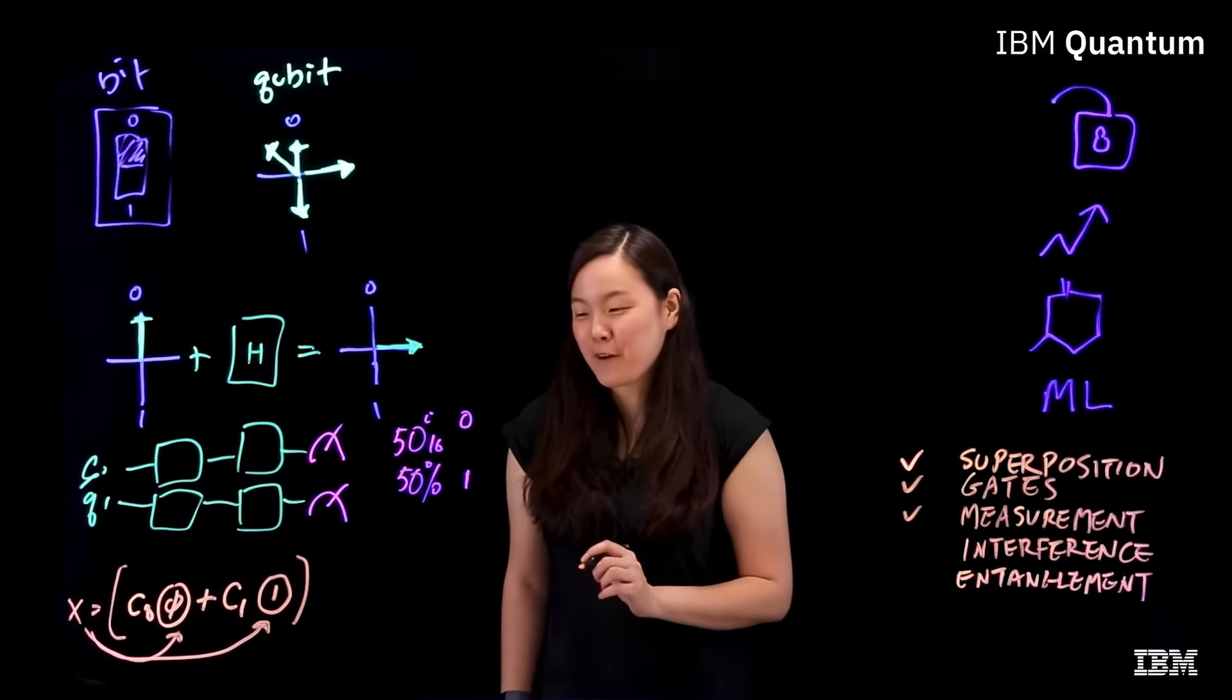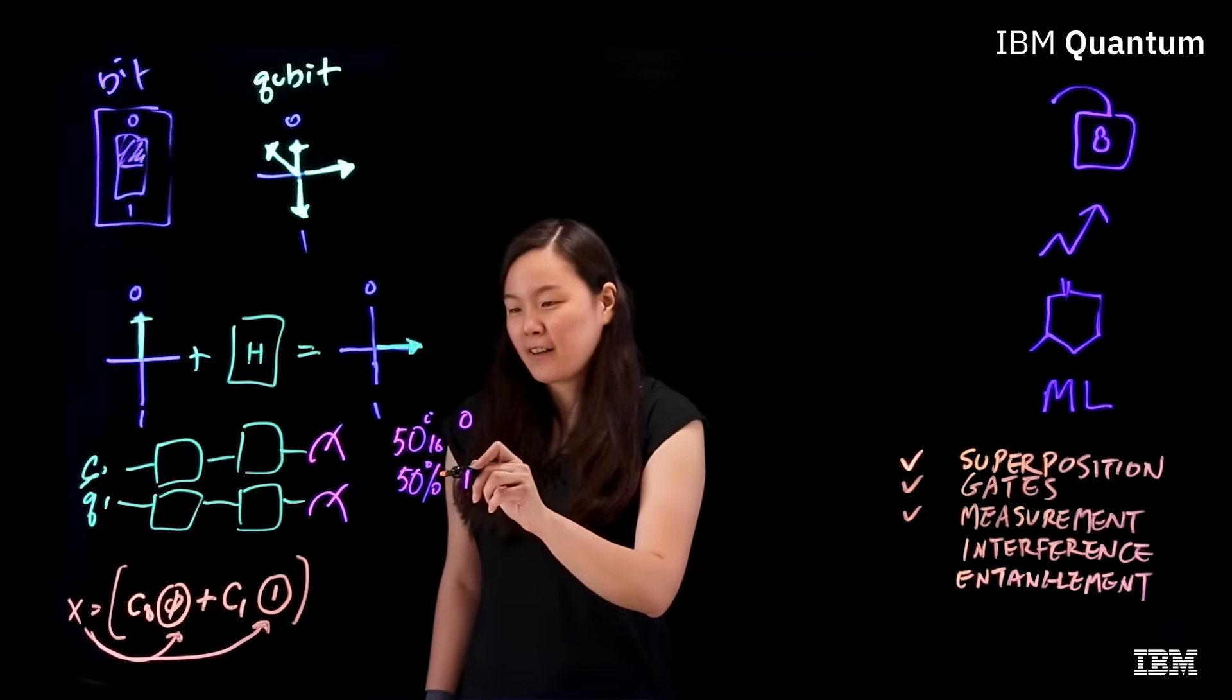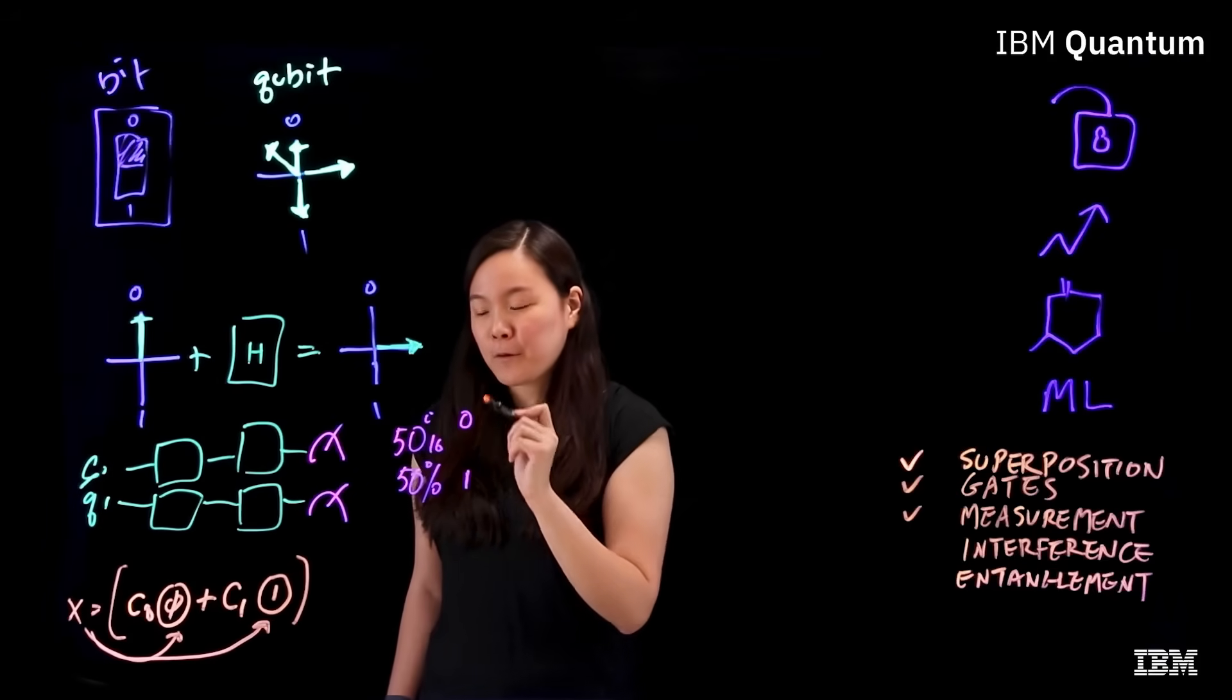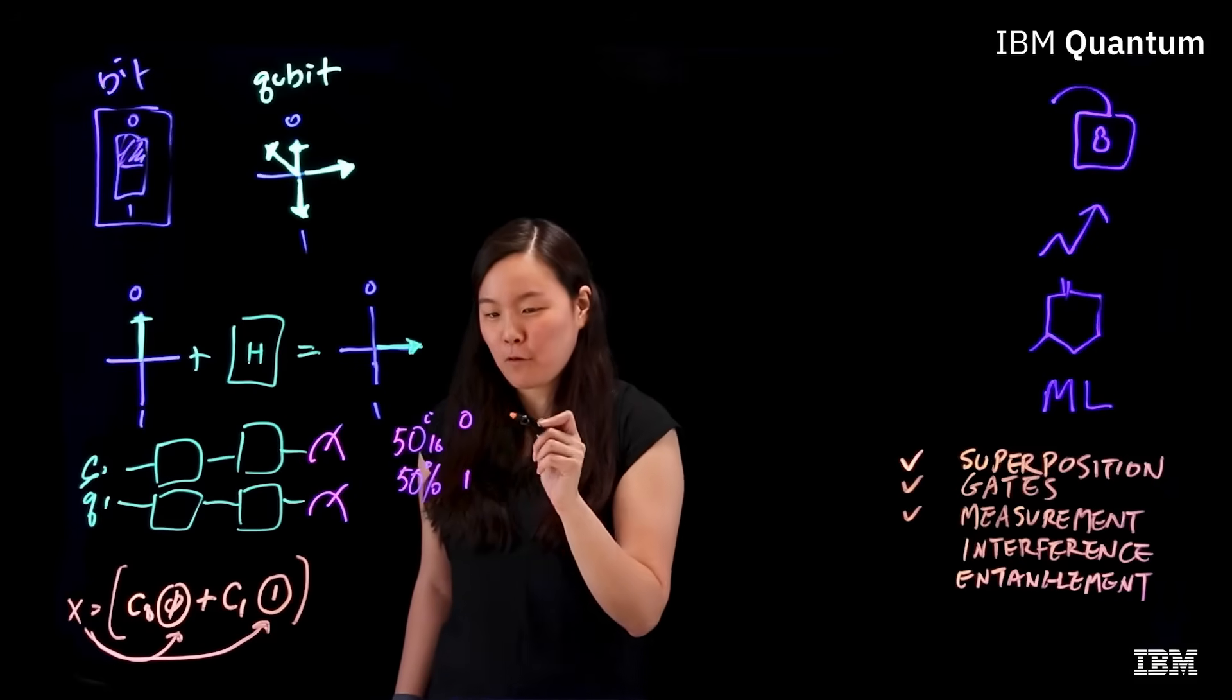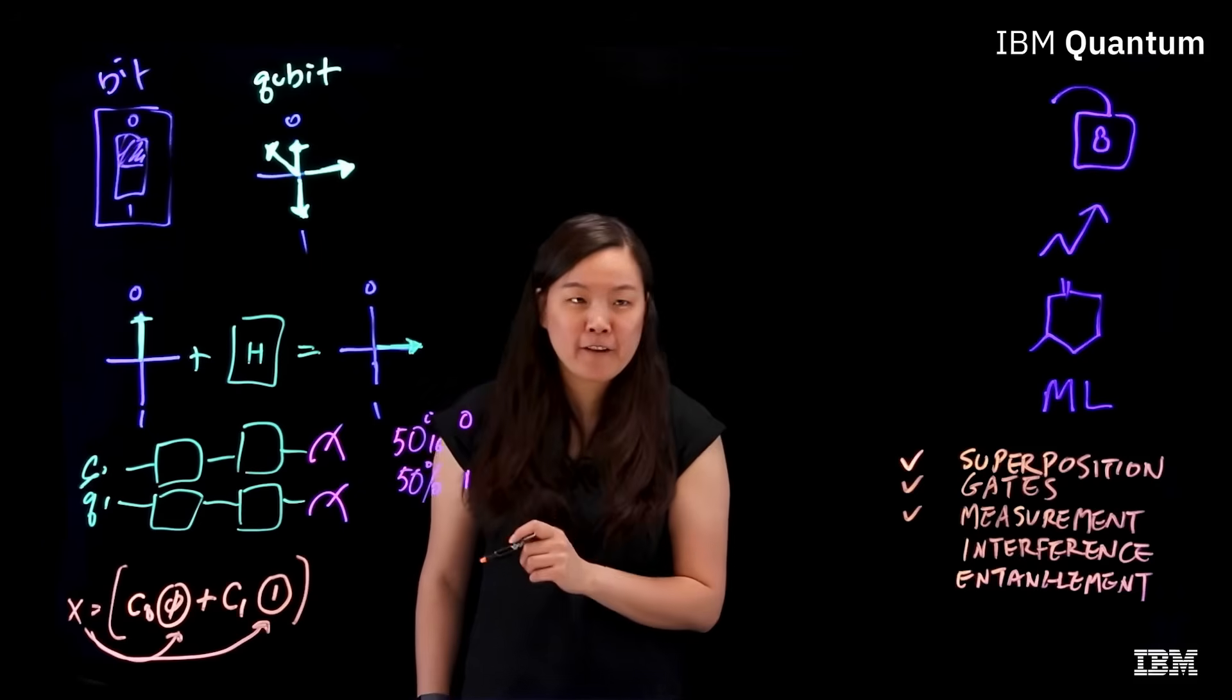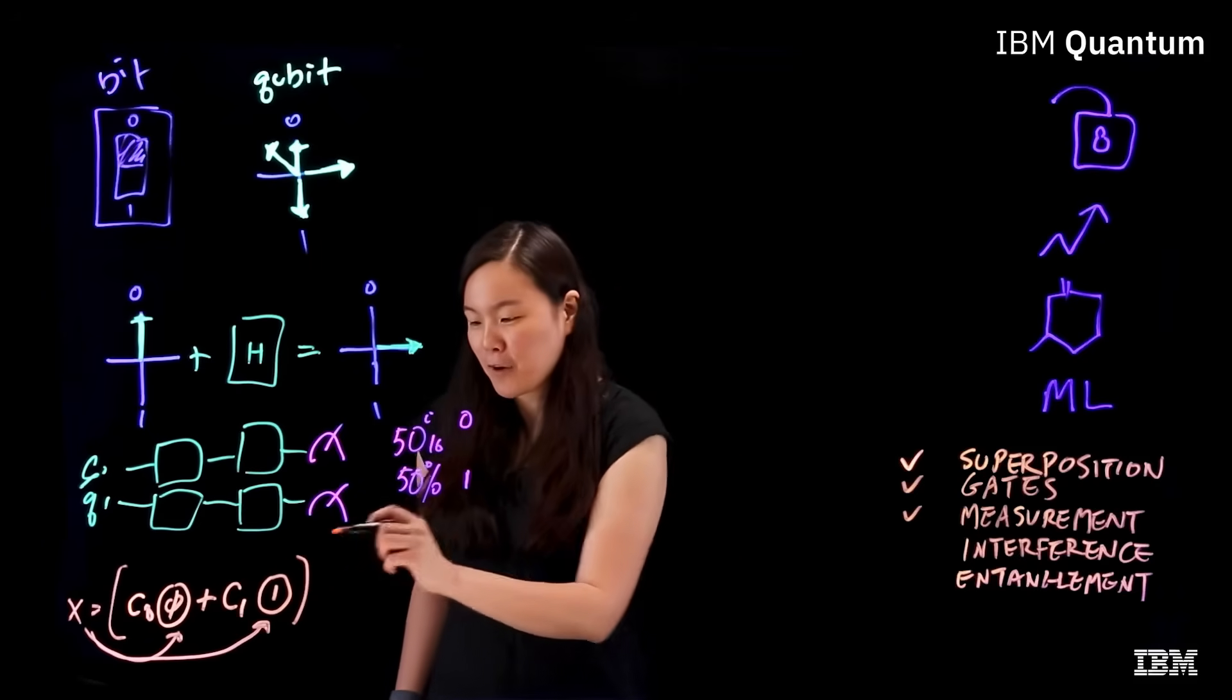However, as you may recall, when a qubit is measured, it loses its superposition and collapses into zero or one. That means we can only get a single answer instead of all of the answers from this parallel computation.